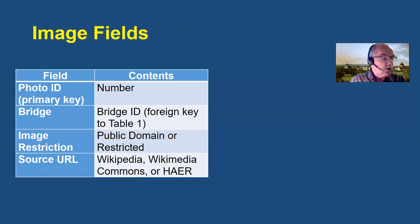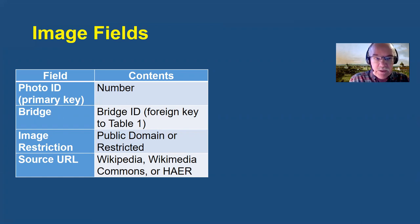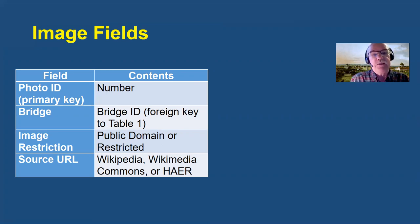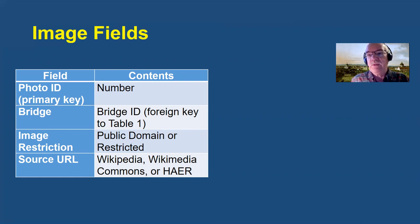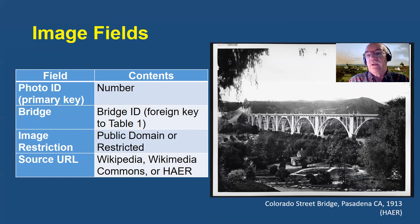Altogether, the images are also defined in the database using a separate field table. Each image is given a photo identification number and the identification number of the bridge that the photo is of. If there are image restrictions on the images, that's noted — either they're public domain or restricted images. The source URLs for the images are given so that we can go back and review the original images online if necessary. This lovely open spandrel deck arch is an HAER image and so it's in the public domain.